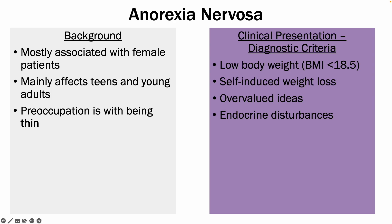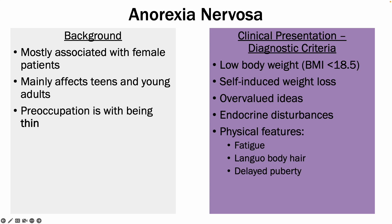A key aspect of anorexia is endocrine disturbances. There's a disturbance in the HPA axis which results in amenorrhea and raised cortisol. In terms of the physical features, you get fatigue, longer body hair, and delayed puberty, amongst others.